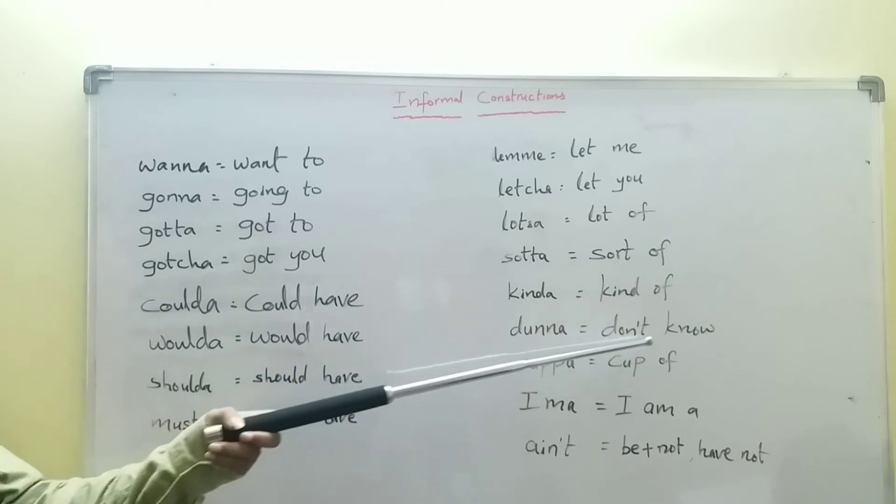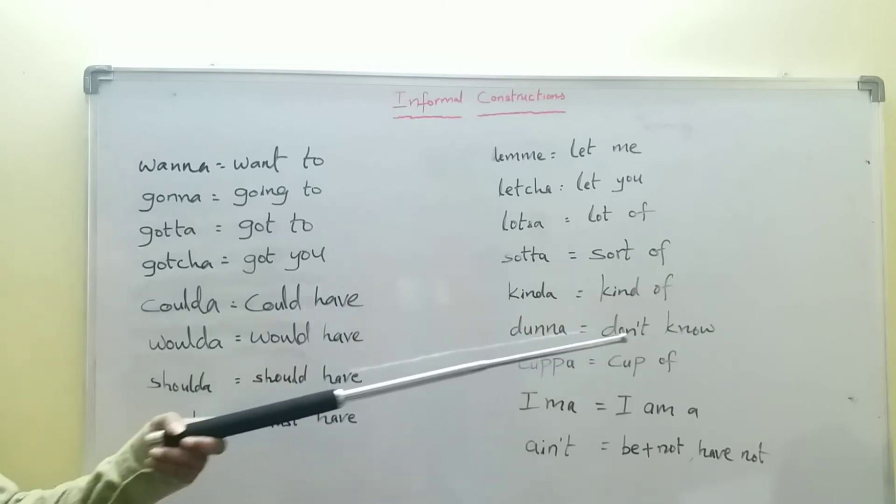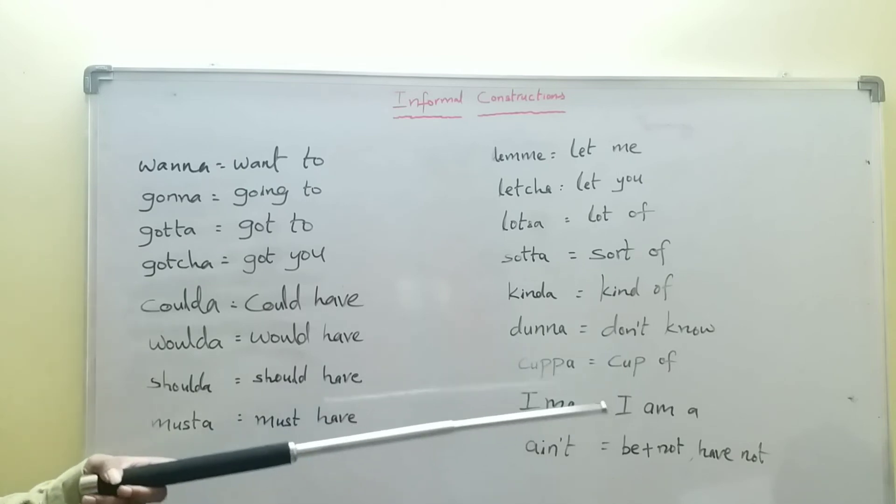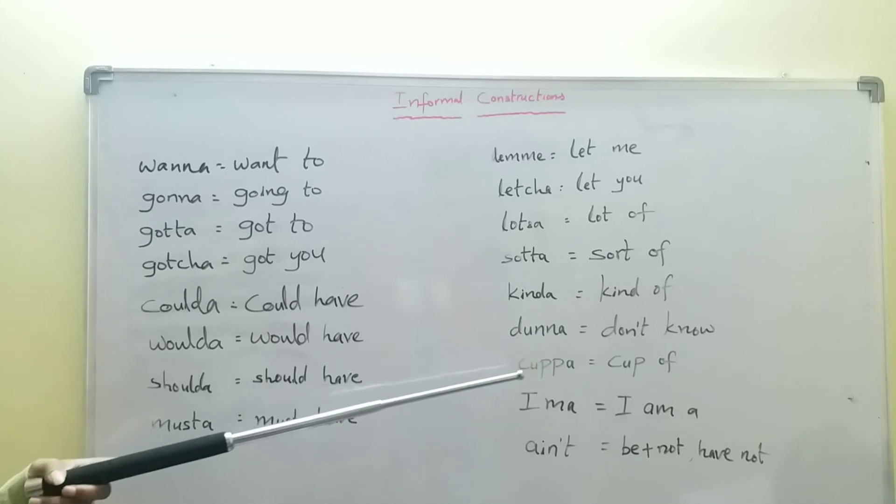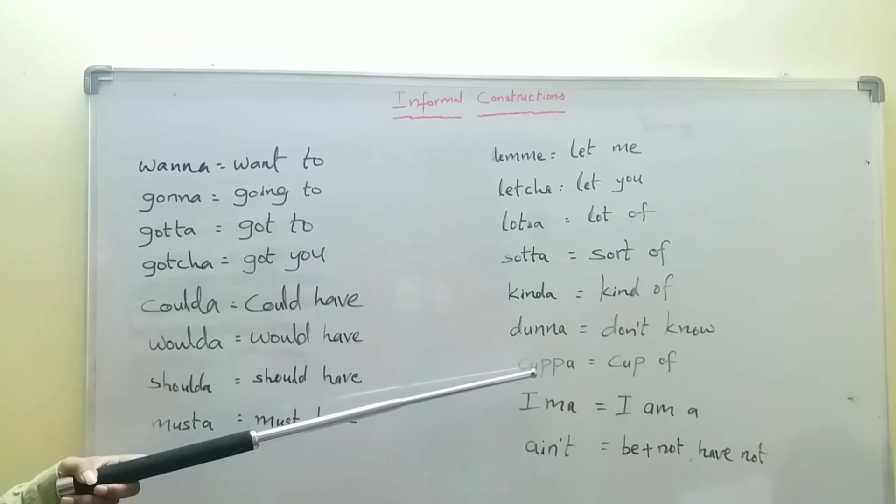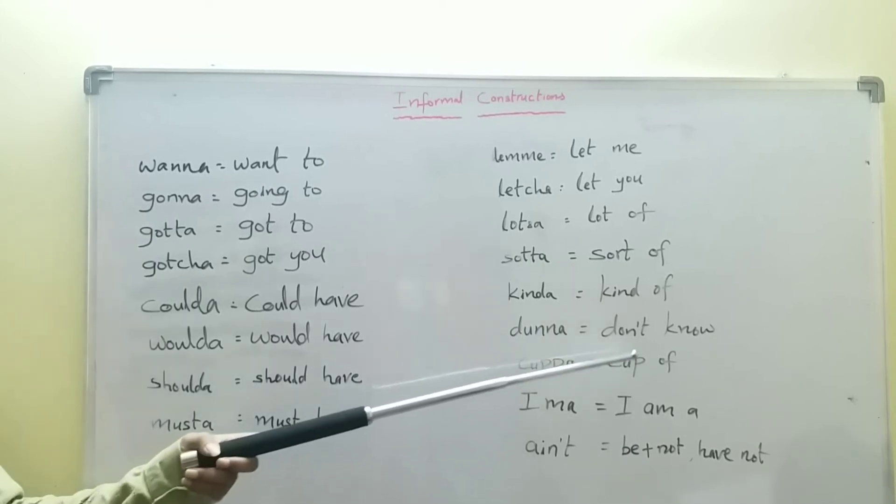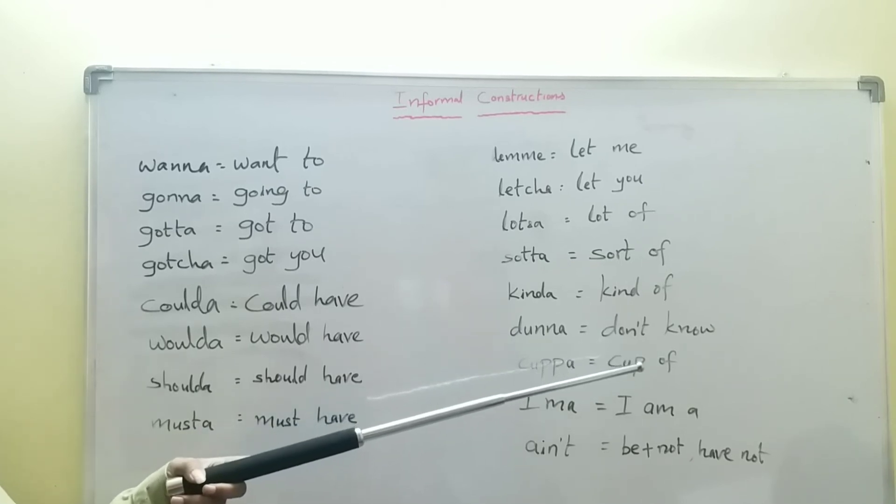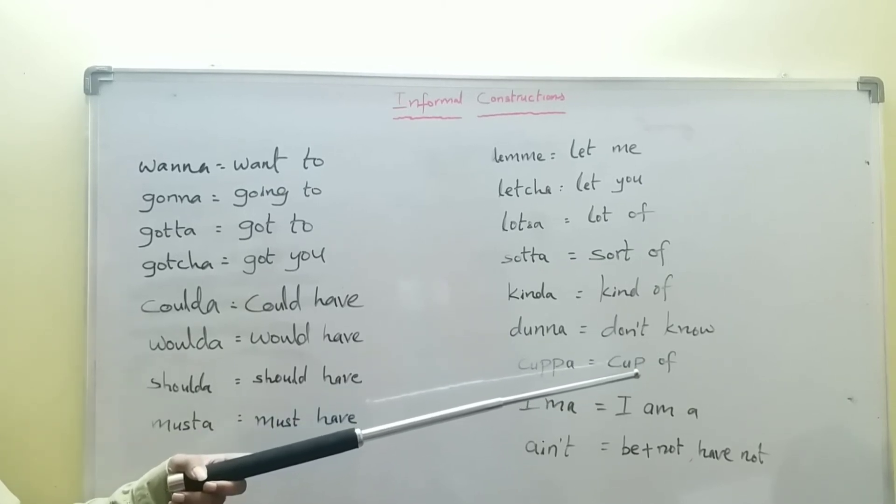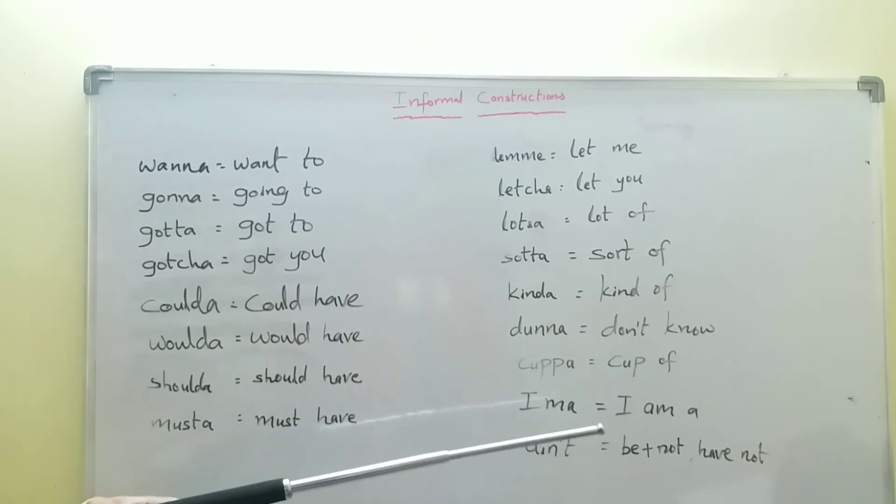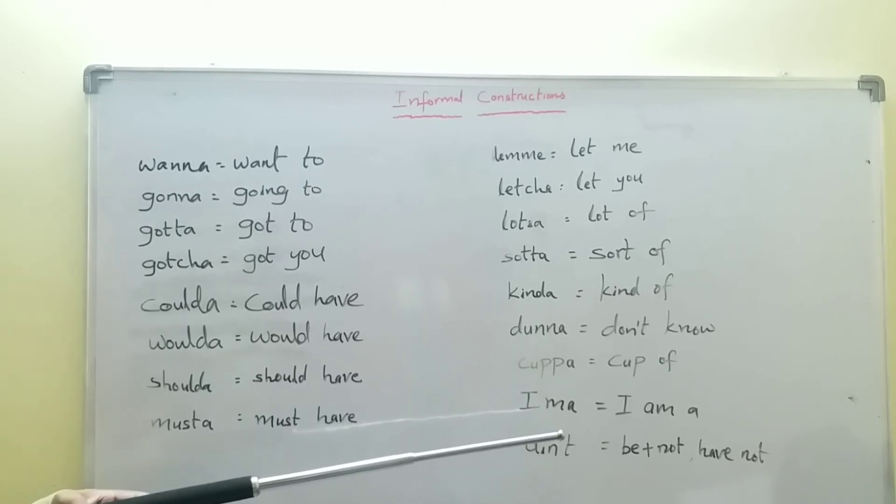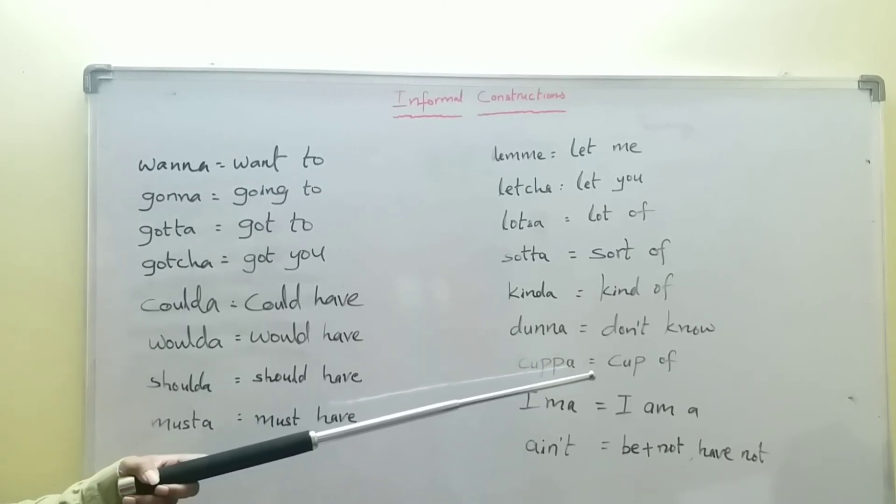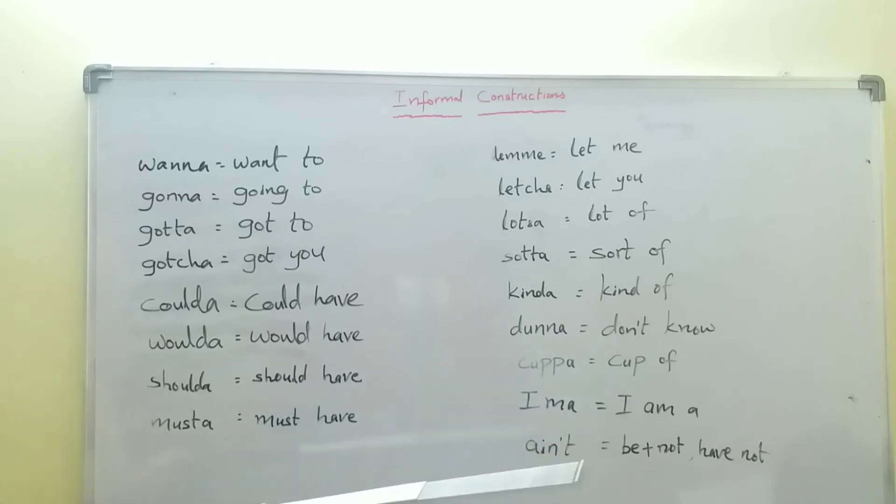Dunno means 'don't know.' 'I don't know about this topic' becomes 'I dunno about this matter.' Another interesting word is cuppa, which means 'cup of.' It's usually constructed like this: a cup of coffee. If you want coffee from anybody, 'I want a cup of coffee' becomes 'I wanna cuppa coffee.'